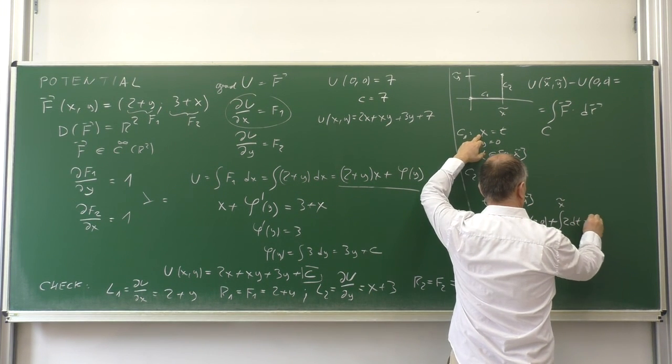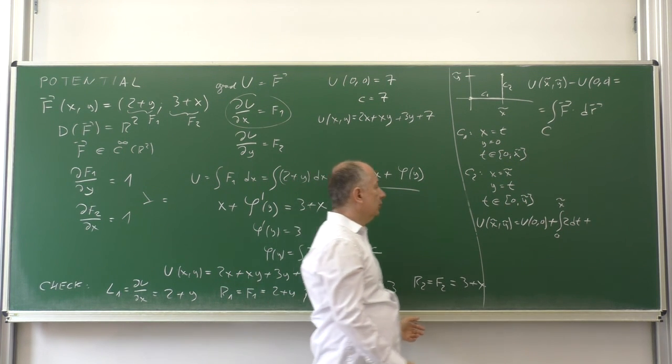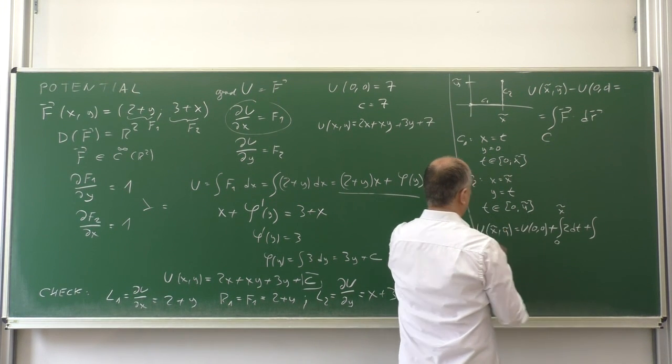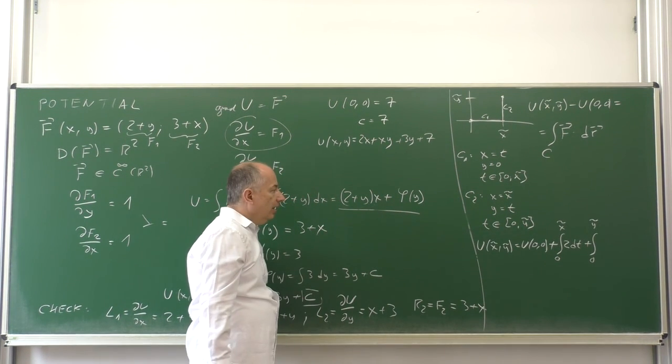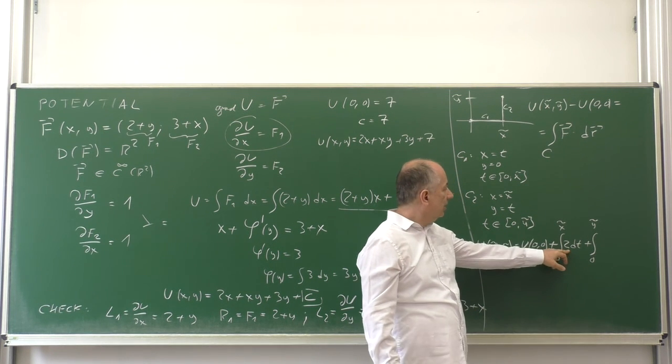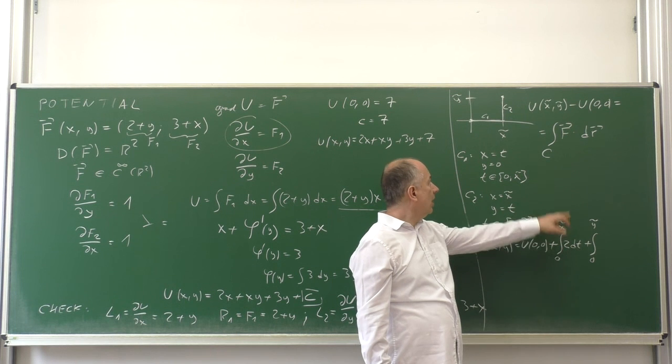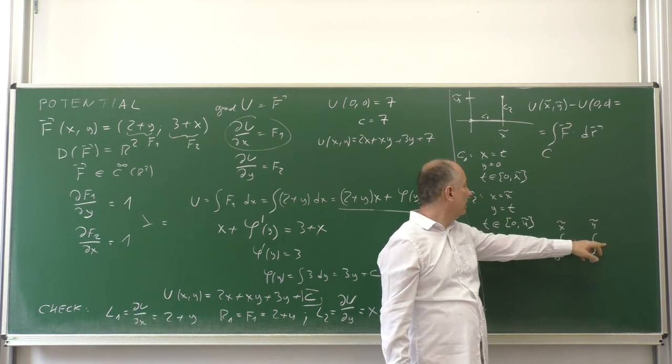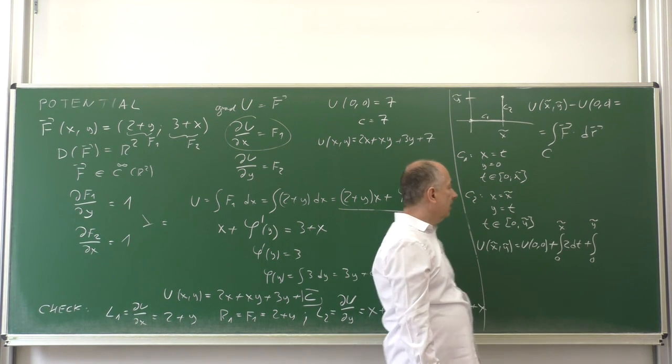Plus the line integral along the curve C2. Then t goes from 0 to y tilde. Why didn't we write F2 dy? Because dy is 0 on C1. And here we don't have to write F1 dx, because dx is 0. So we write only F2 dy.